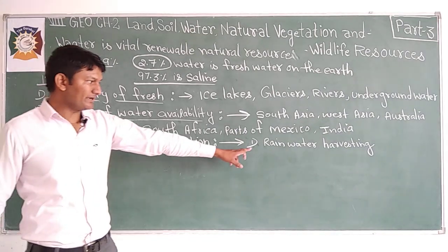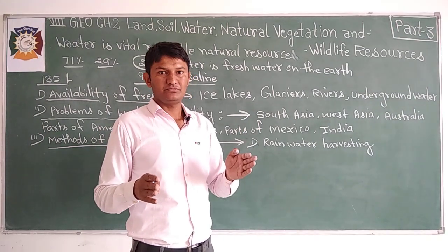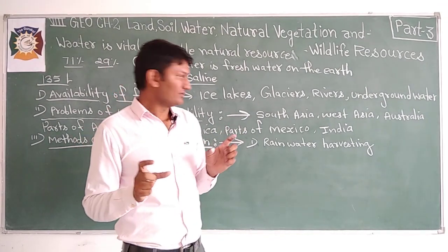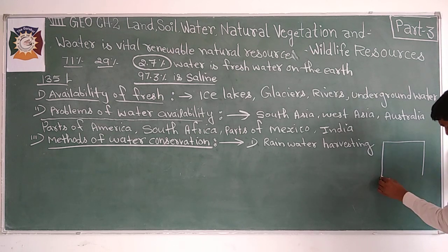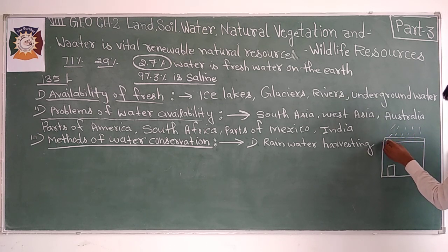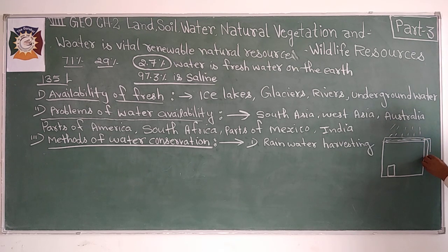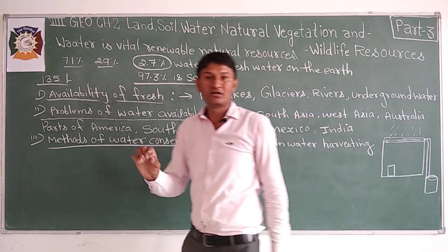In many parts of the country, people build their terraces in such a way that they can collect rainwater. The terrace is designed so that during rainfall, water flows down through a pipeline and is stored in a tank or underground reservoir. This is a very essential and important method for countries like India.